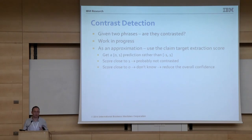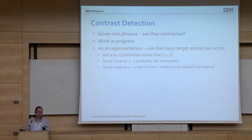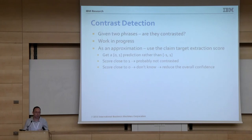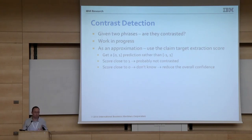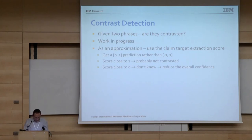Contrast detection is still under development and is a hard problem. As an approximation for now, we use the score of the target extraction for the claim. The idea is that if the target was extracted with high confidence, it is usually not contrasted; if it was extracted with low confidence, it may or may not be contrasted. In any case, we reduce the confidence of the whole prediction when the confidence is low.